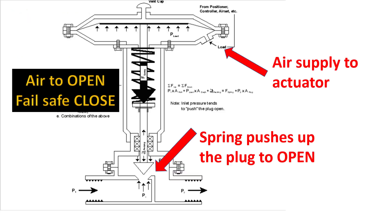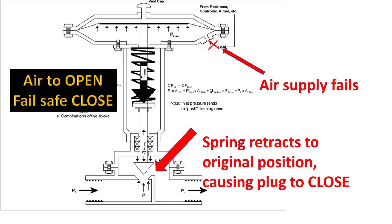You can see here this actuator has air supplied at the bottom to open the plug. When the air supply fails — as indicated here — the spring automatically retracts to its original position, causing the plug to close. You can see that when the air supply fails, the spring returns to its original position so that the plug gets closed in the control valve body.